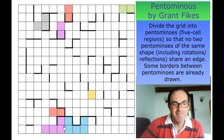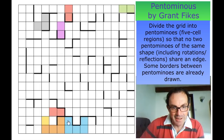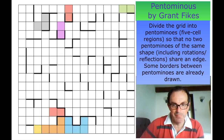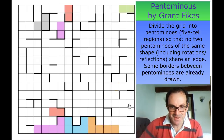That disambiguates this pentomino — this pentomino can't be a U pentomino now because that's a U pentomino, so this has to be an L pentomino. And presumably this one also has to be an L pentomino, because we can't allow it to be a U pentomino.